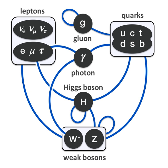The Higgs mechanism is believed to give rise to the masses of all the elementary particles in the standard model. This includes the masses of the W and Z bosons and the masses of the fermions, i.e., the quarks and leptons.